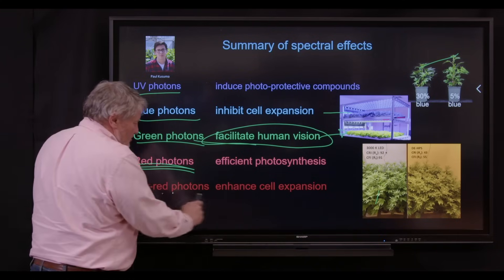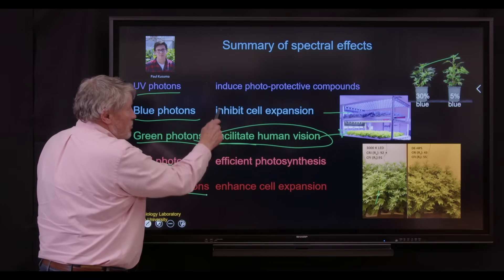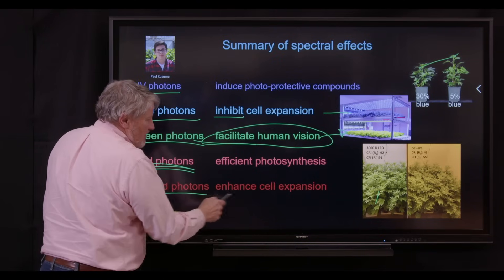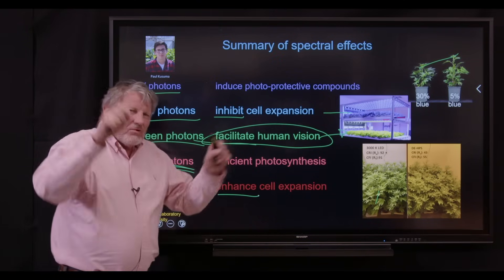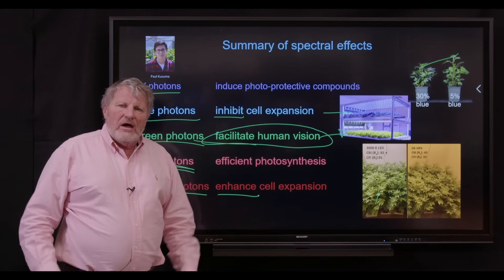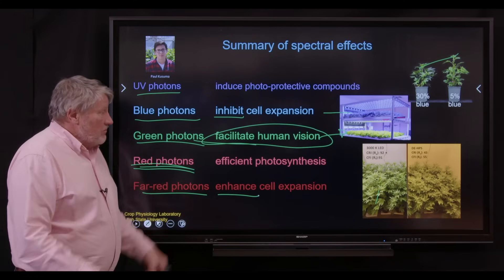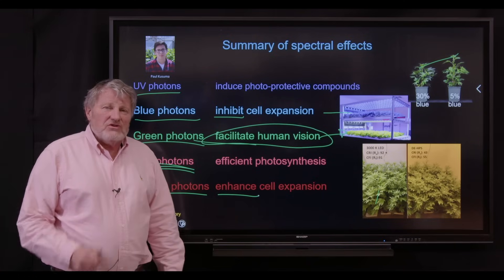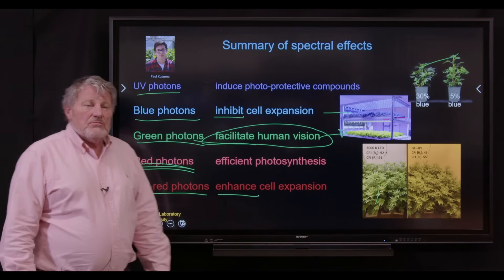And then far red photons, which are photosynthetic, do the opposite of blue. These inhibit, these enhance. So we can play with those two colors of light to shape plants. Tall, short, fat, thin, wide. It's a wonderful time to be doing research on this to optimize colors and plant shape.